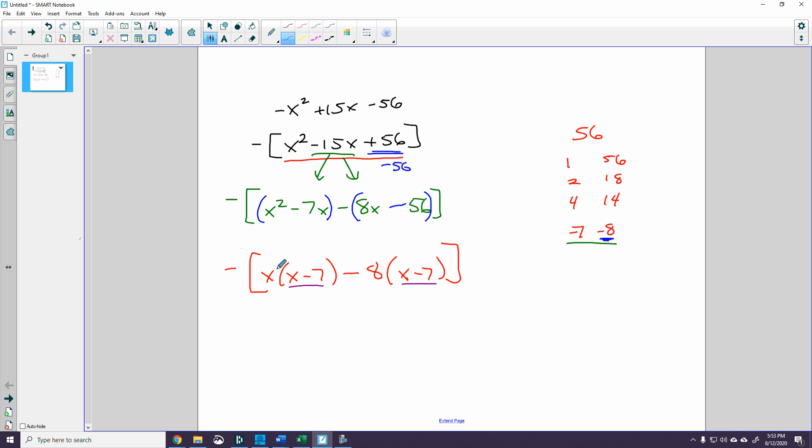So now out of this thing right here, I have negative. I'm going to undistribute an x minus 7. So I go x minus 7 times x minus 8. And there's my answer.